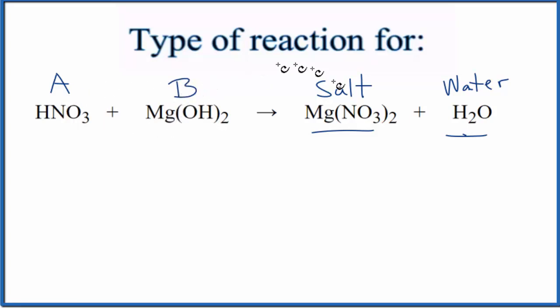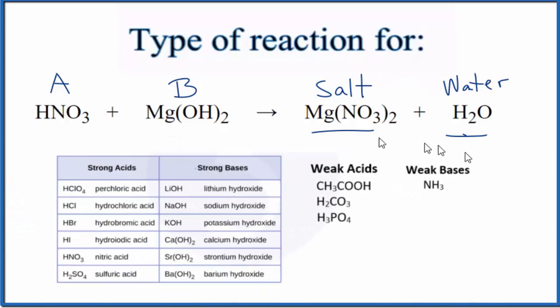That's going to be a base. Acid plus base gives you salt and water. That's neutralization. It might be helpful to memorize this table here of common acids and bases. It makes chemistry a lot easier when you can just pull these out of your brain quickly. We can see we have HNO3 right here, nitric acid. That's an acid. It's a strong acid.